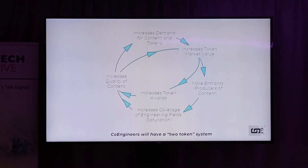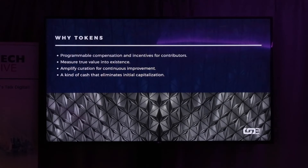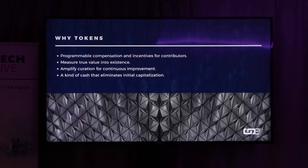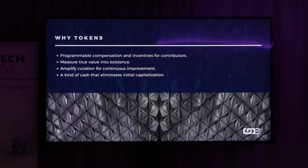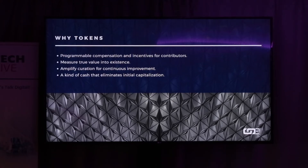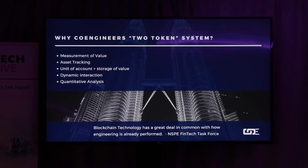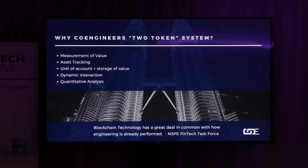Co-engineers proposes a two-token system as its incentive. Why tokens? Because they're programmable compensation and incentives for contributors. They measure true value into existence — that's really important. There's also amplified curation of continuous improvement, again echoing the idea of miners in Bitcoin. It's a kind of currency that eliminates initial capitalization, so you don't need to look for huge amounts of money to get this started. The two-token system is a measurement of value, an asset tracker, a unit of account, and consequently a storage of value, with dynamic international and quantitative analysis ability as well.